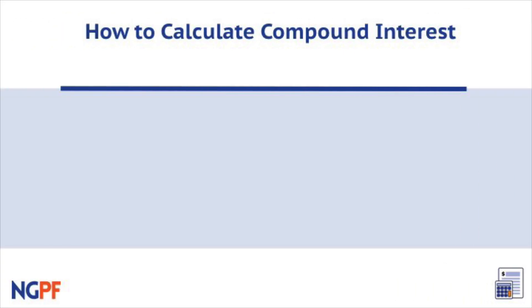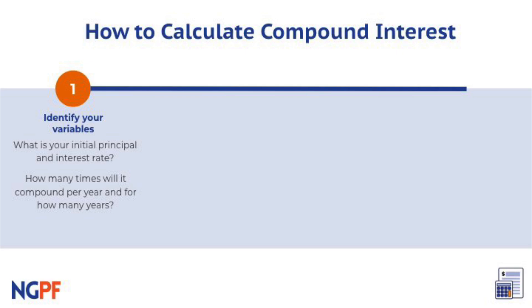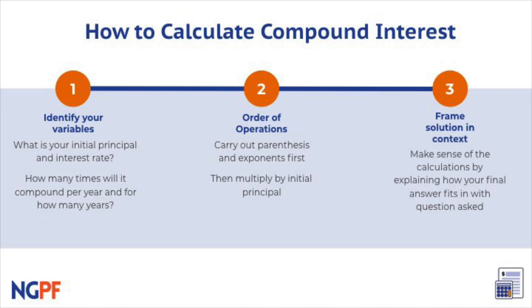Let's review how to calculate compound interest. First, you must accurately identify your variables, the P, R, N, and T in the formula. Then you can use order of operations to solve. Finally, you can frame the solution in the context of the situation you were being asked to examine.